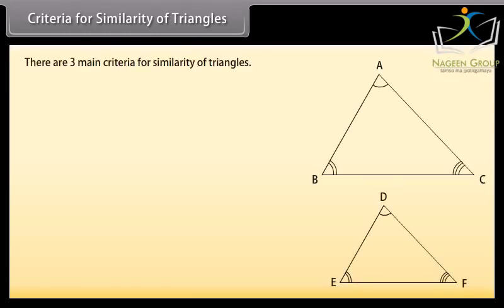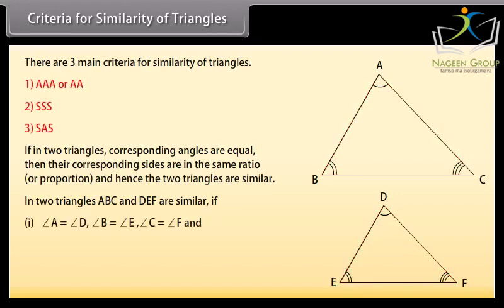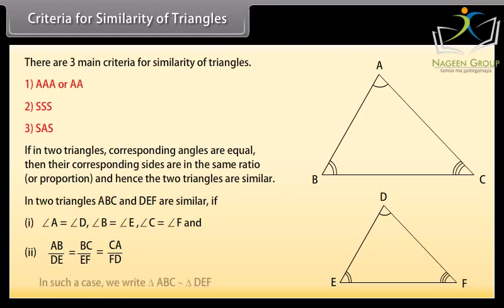Criteria for similarity of triangles. There are three main criteria: one, AAA or AA; two, SSS; three, SAS. If in two triangles the corresponding angles are equal, then their corresponding sides are proportional and hence the triangles are similar. In triangles ABC and DEF: angle A equals angle D, angle B equals angle E, angle C equals angle F, and AB upon DE equals BC upon EF equals CA upon FD. We write triangle ABC is similar to triangle DEF.